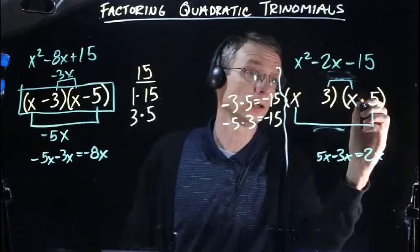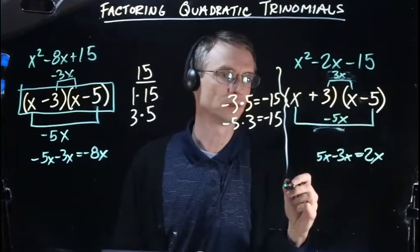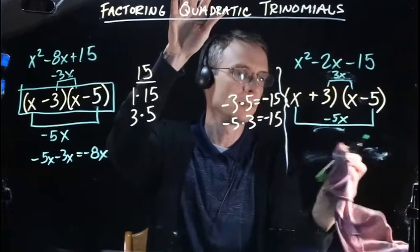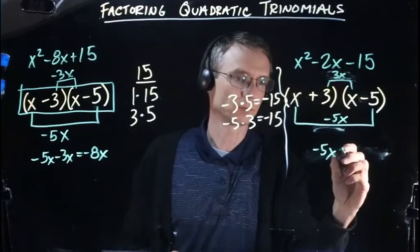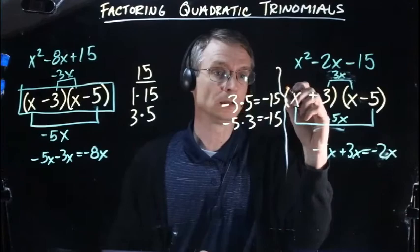Now I'll try negative 5 and positive 3. 3 times x is 3x, and negative 5 times x is negative 5x. So negative 5x plus 3x equals negative 2x, which is our middle term. This is our factored form of this quadratic.